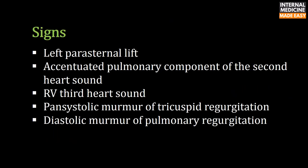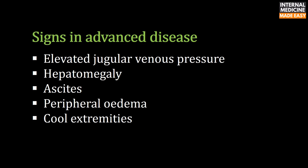Signs of pulmonary hypertension include left parasternal lift, accentuated pulmonary component of the second heart sound, right ventricular third heart sound, pansystolic murmur of tricuspid regurgitation, and diastolic murmur of pulmonary regurgitation. Signs in advanced disease include elevated jugular venous pressure, hepatomegaly, ascites, peripheral edema, and cool extremities.